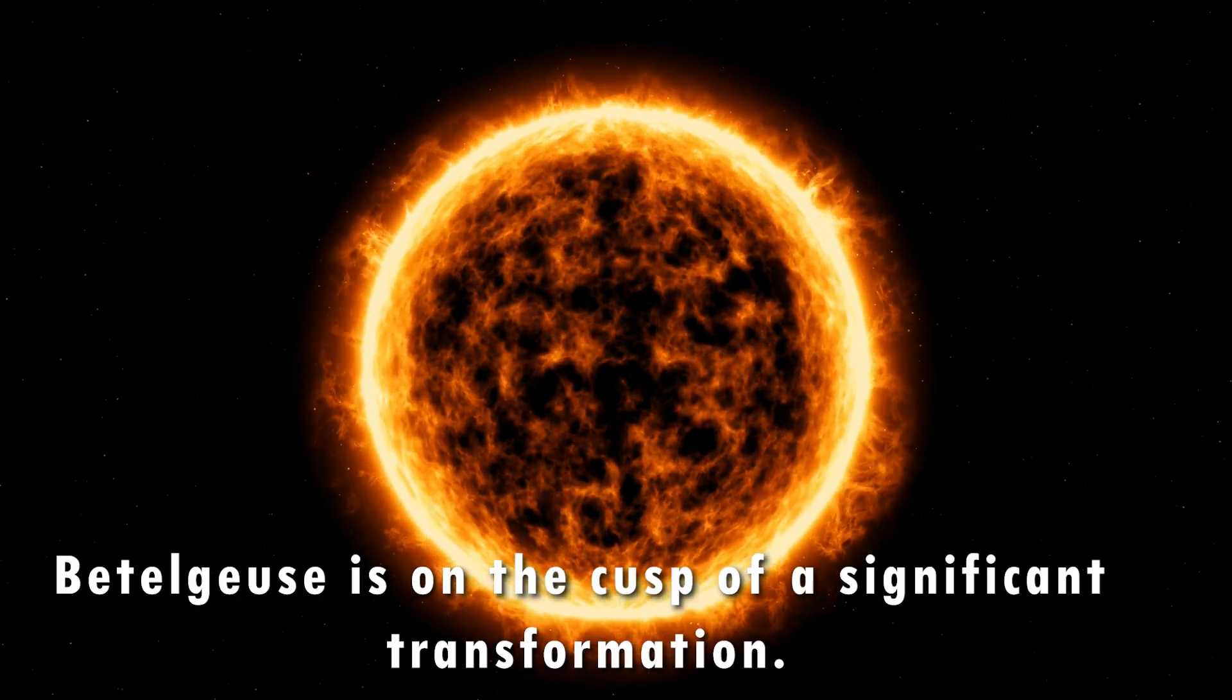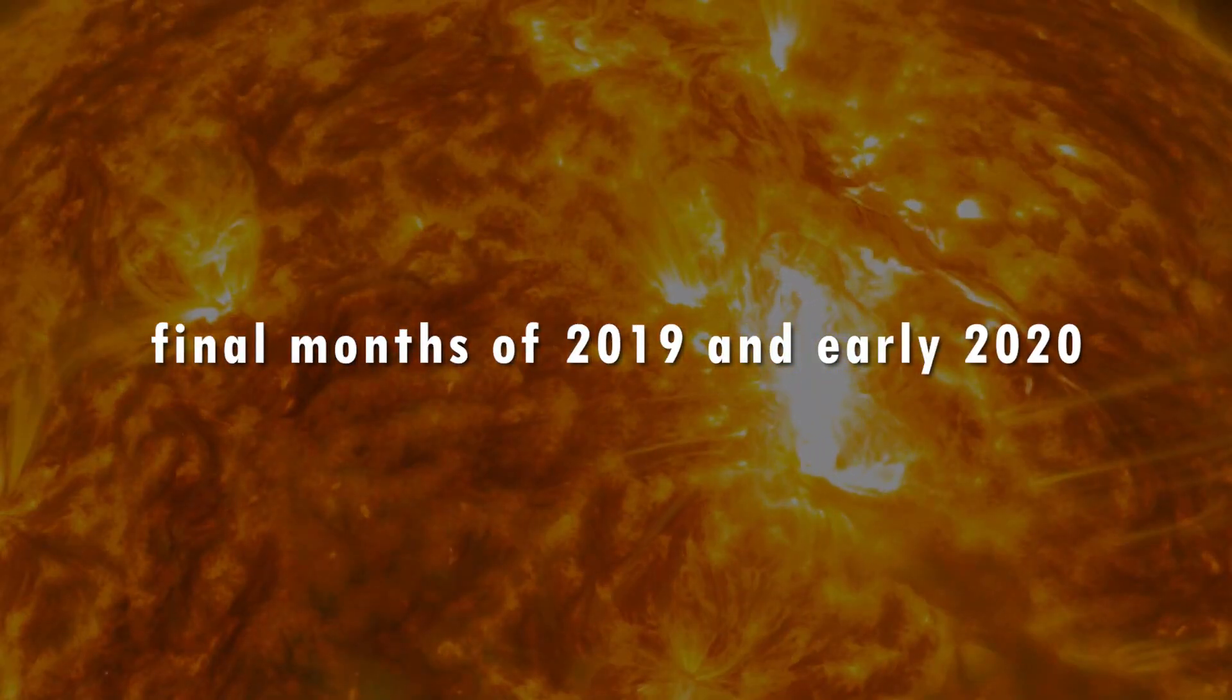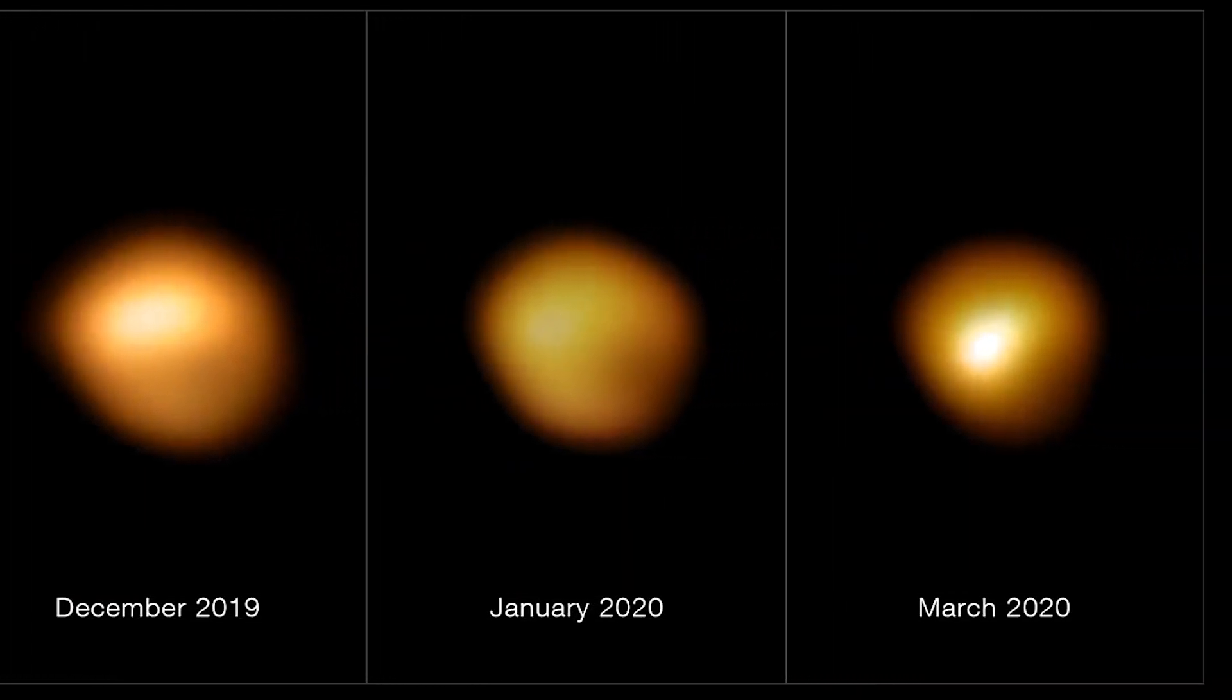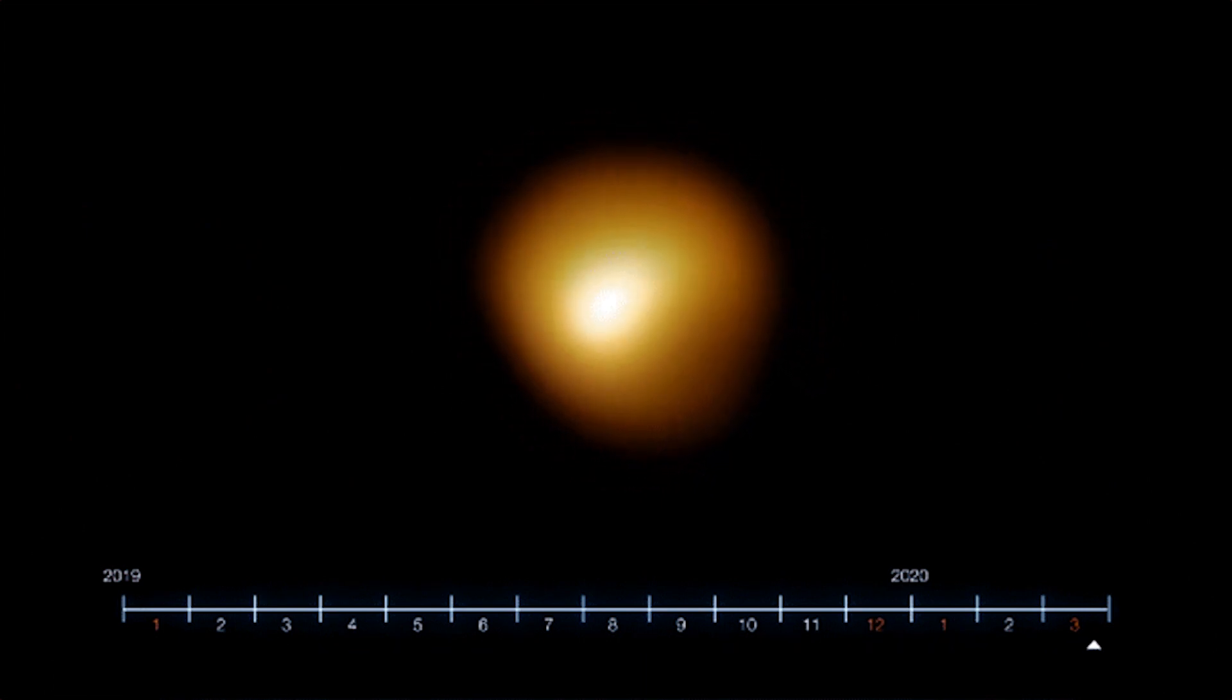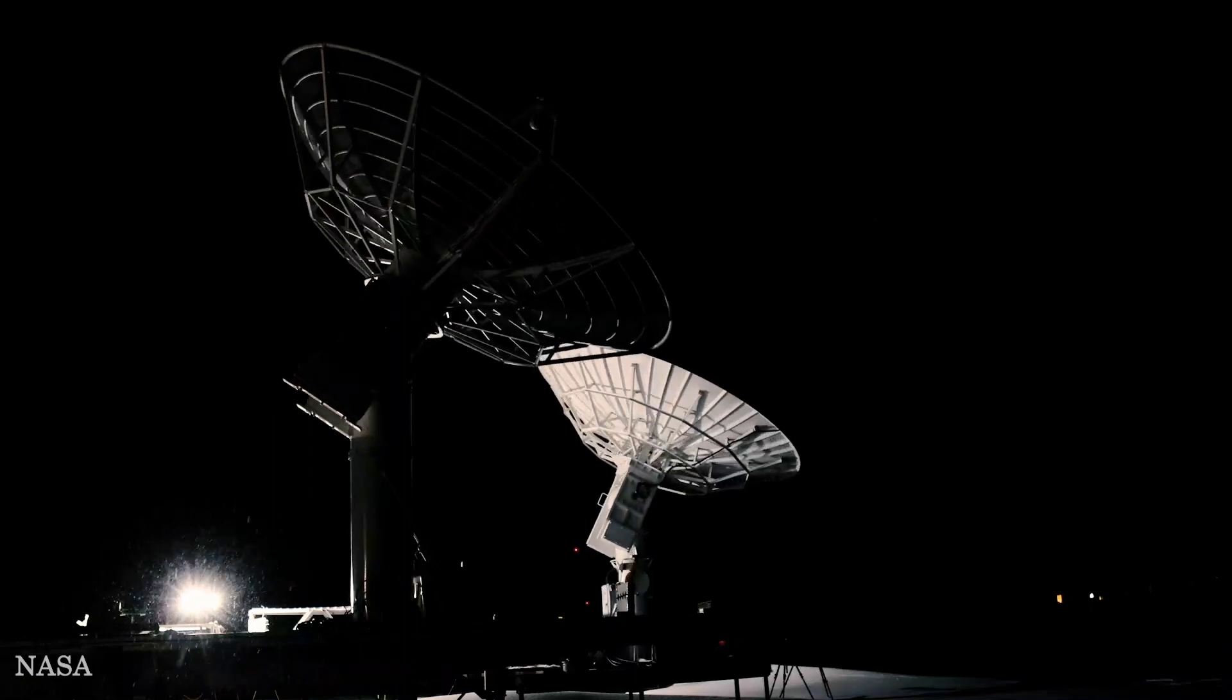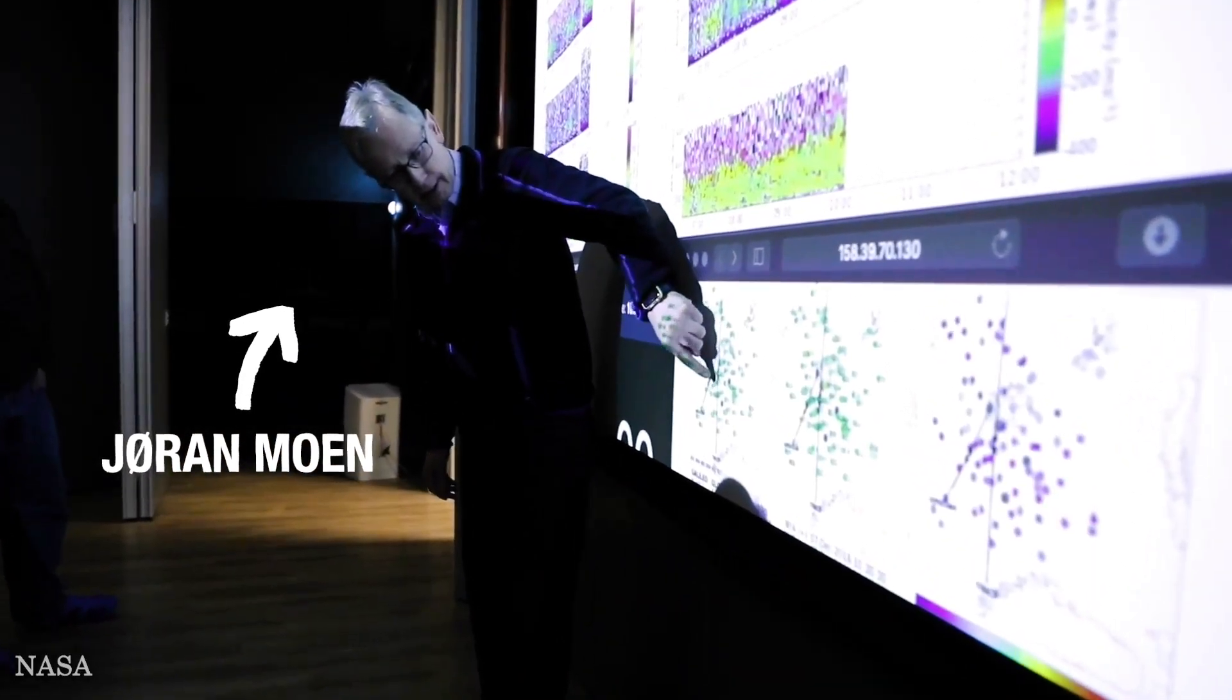But what does the future hold for this colossal star? Recent scientific observations suggest that Betelgeuse is on the cusp of a significant transformation. In the final months of 2019 and early 2020, Betelgeuse, a star that we've come to know so well, began to dim dramatically. This wasn't just a minor reduction in brightness. It was a substantial dimming clearly visible to the naked eye. This sudden and unexpected change was astonishing for a star that has been a constant presence in our night sky for millions of years. Scientists and astronomers rushed to find answers as the world watched with bated breath.